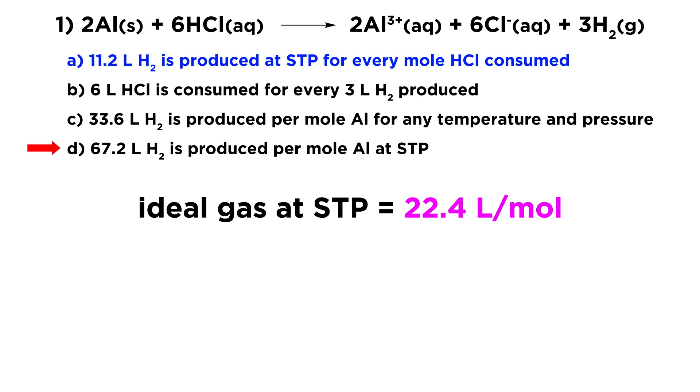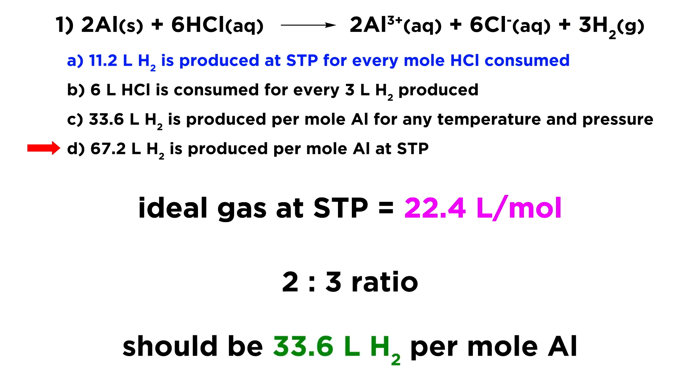D, 67.2 liters of hydrogen is produced per mole of aluminum at STP. Let's look at this. We have a two to three ratio. So that means for every mole of aluminum, we should get one and a half times that. We need three halves that many moles. So if we have one mole of aluminum, then we should be producing 1.5 moles of hydrogen.